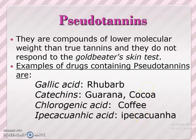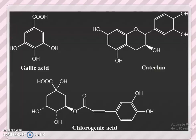Pseudo-tannins (serotannins) are compounds of lower molecular weight than true tannins and do not respond to the gold beater's skin test. Examples of drugs containing pseudo-tannins are gallic acid, catechin, and chlorogenic acid.